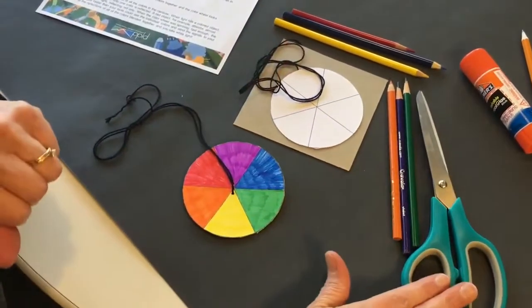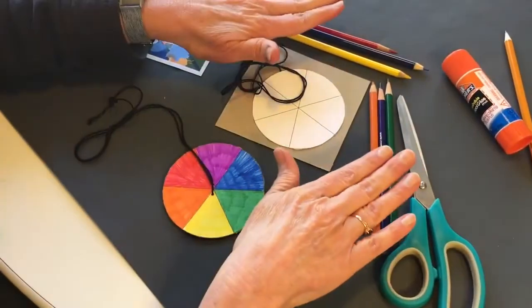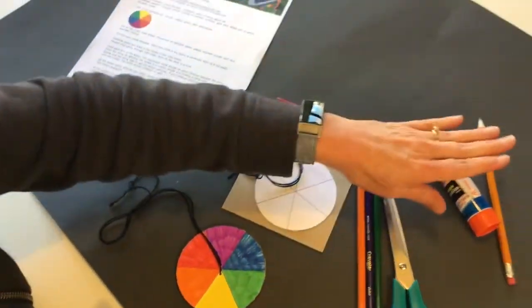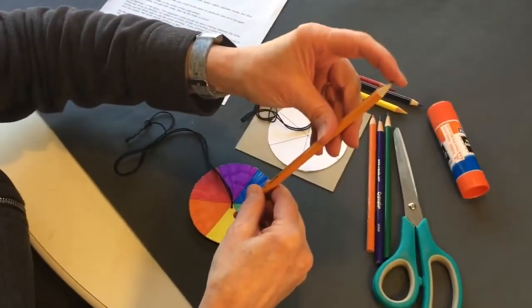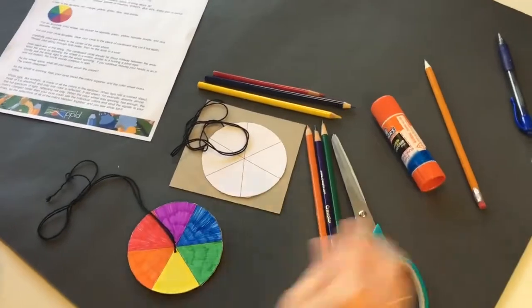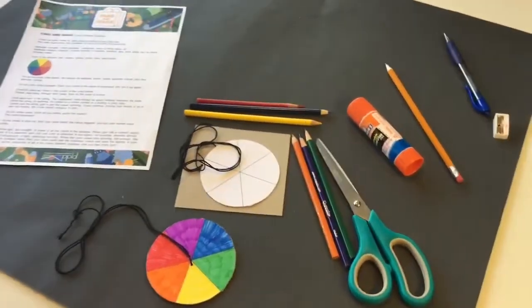You'll need to provide scissors, colored pencils or crayons, a glue stick, and a pencil that's nice and pointy. You're gonna poke some holes and I think we can get started.